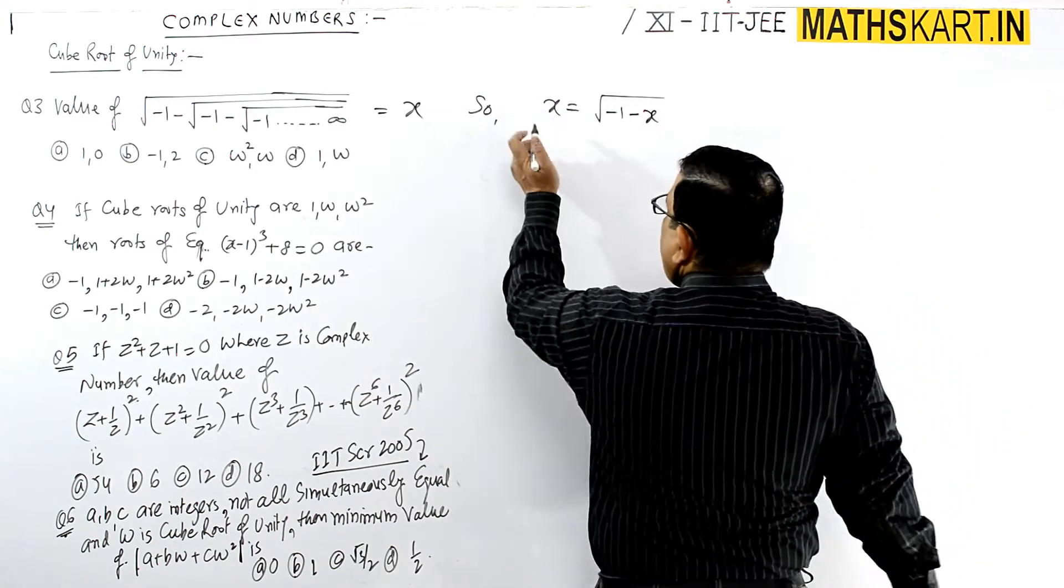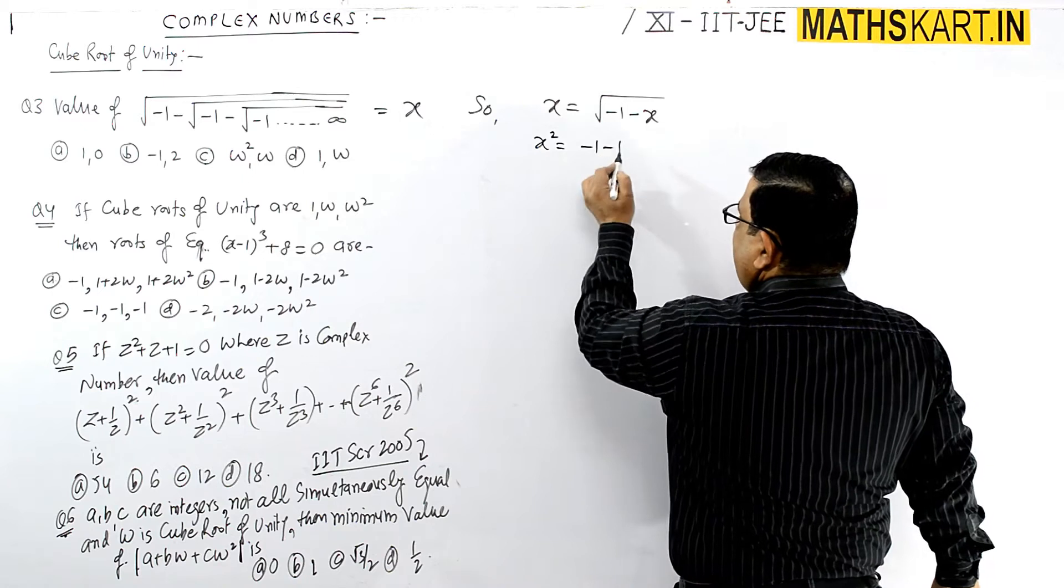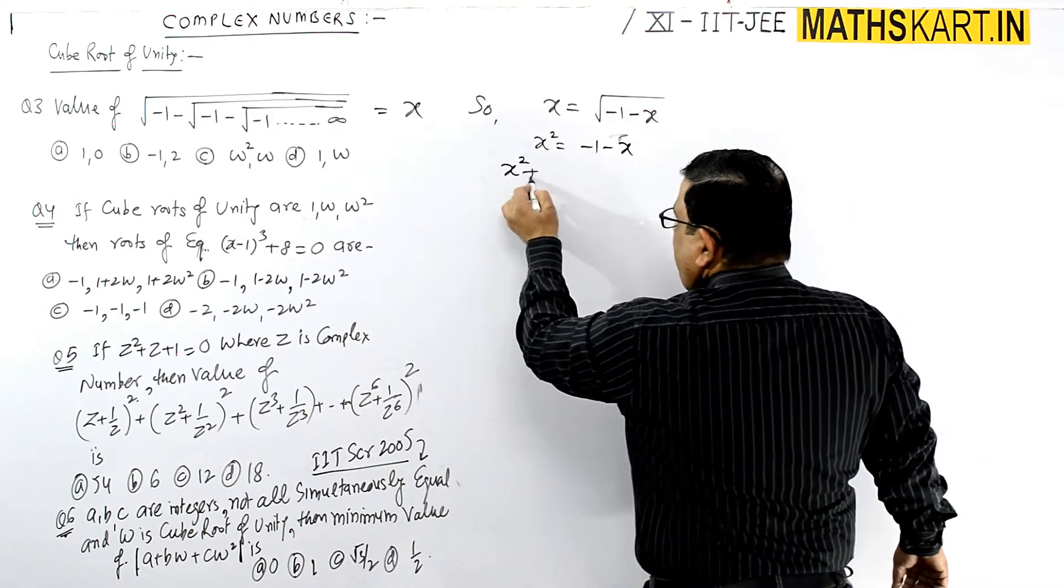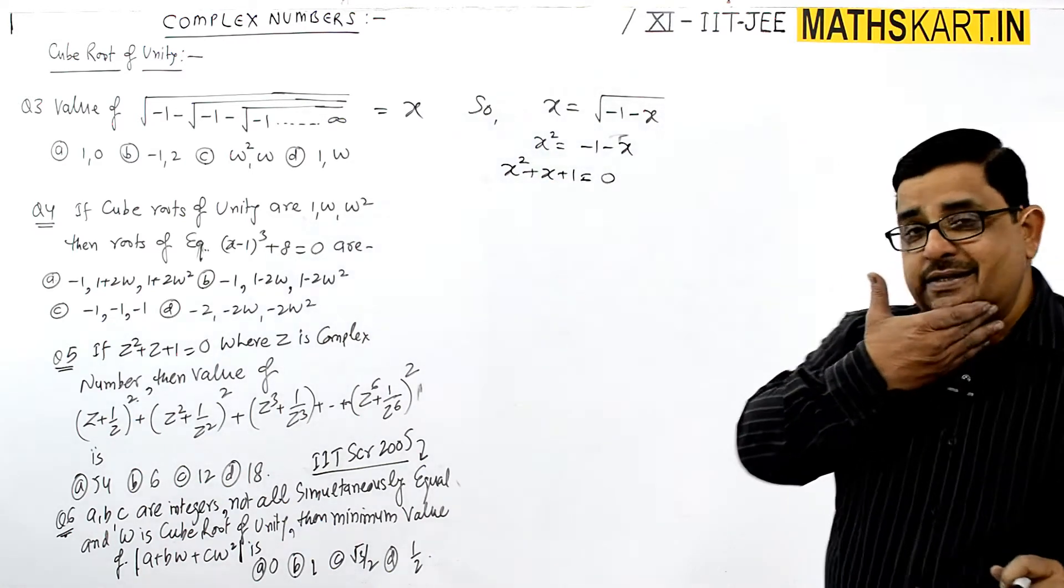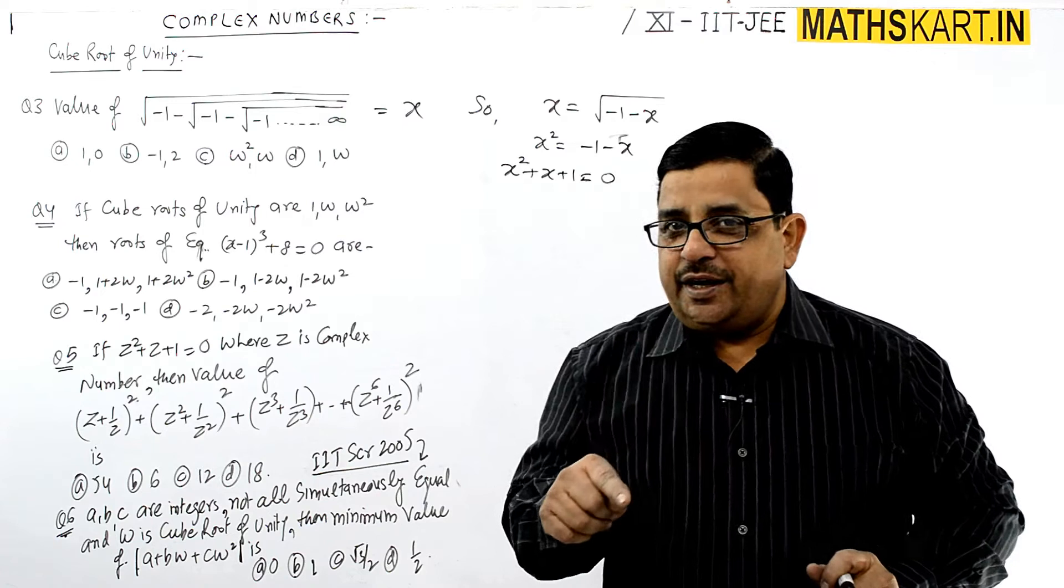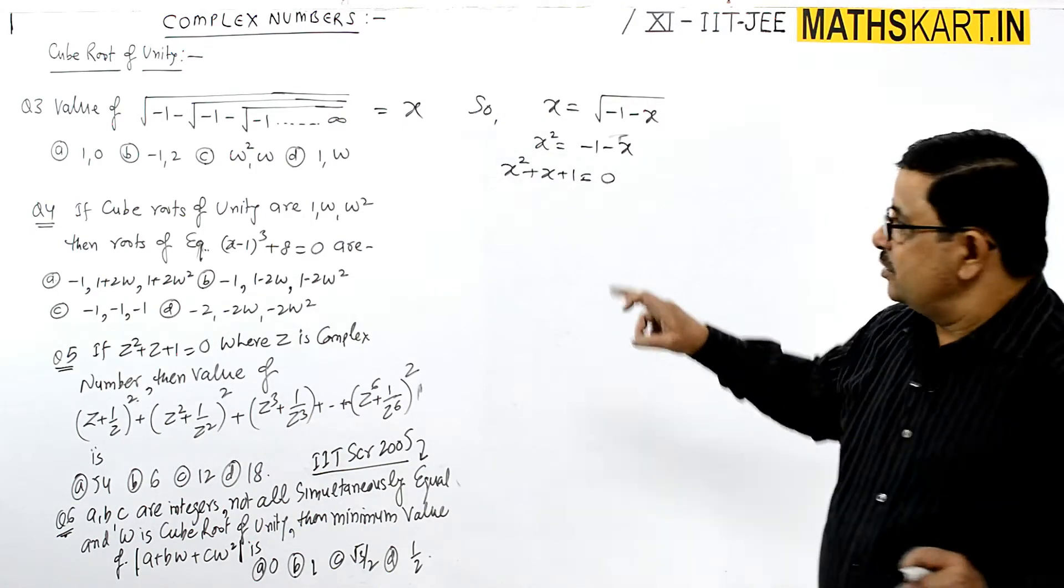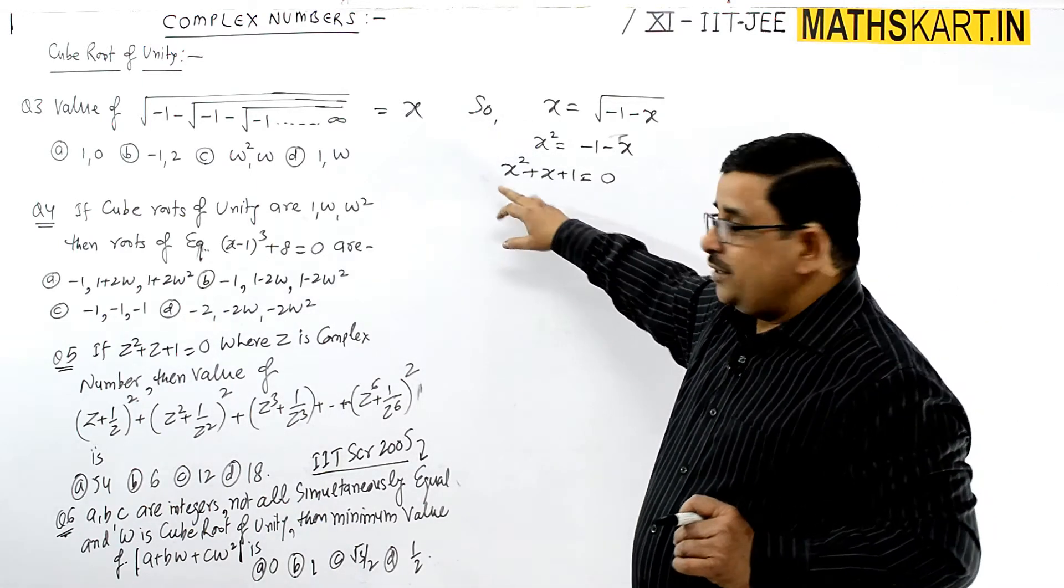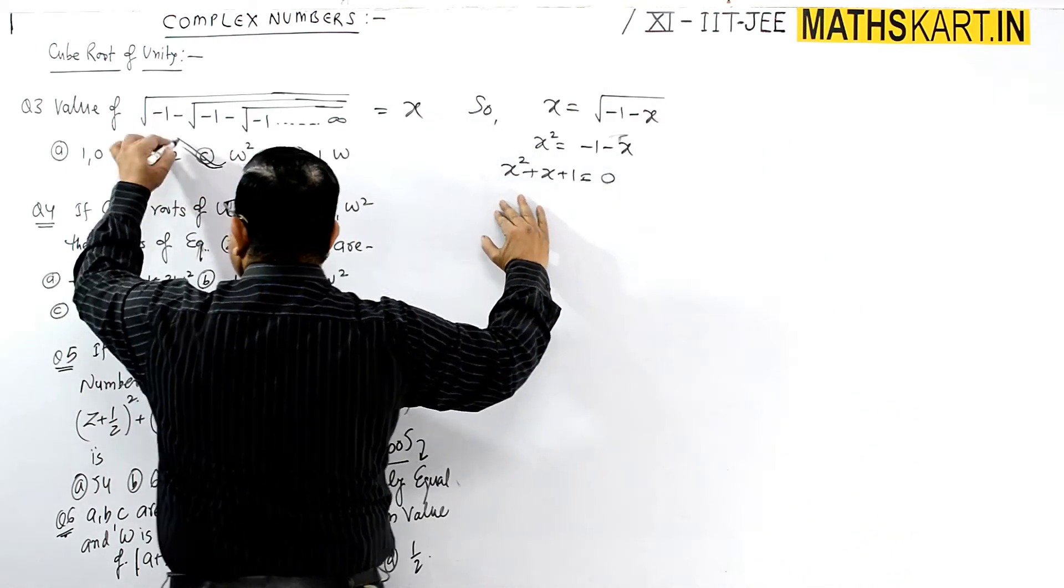Squaring gives minus one minus x, so x square plus x plus one equals to zero. When you solve, as we did in cube root of unity, the two roots are omega and omega square. Therefore, C option is correct.